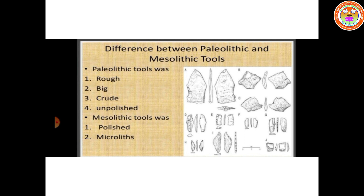Now, we are going to see the differences between Paleolithic age and Mesolithic age. Paleolithic tools were rough, big, crude, and unpolished, whereas Mesolithic tools were polished and microlithic.